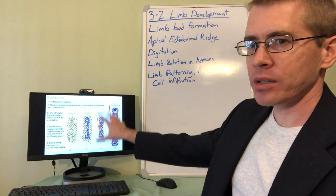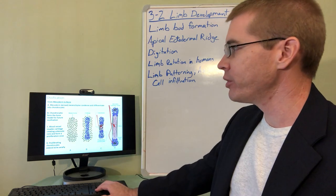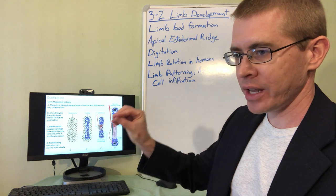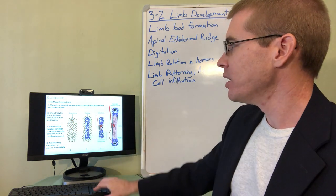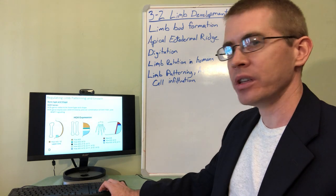We've already talked about this ossification process. If you need a refresher, it's here or you can go back to the previous slides. But the understanding that the mesenchyme is condensing and initiating chondrogenesis is the key here.